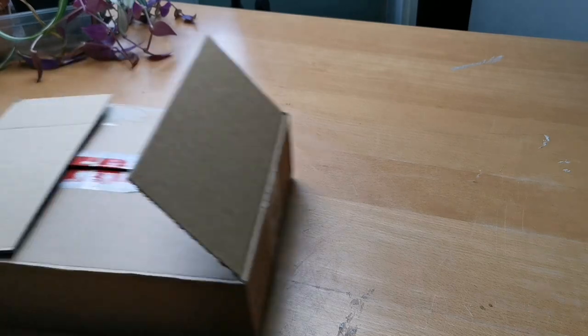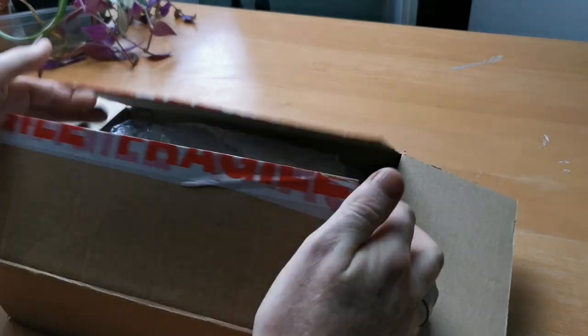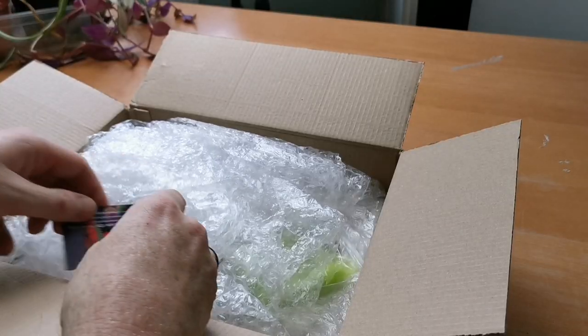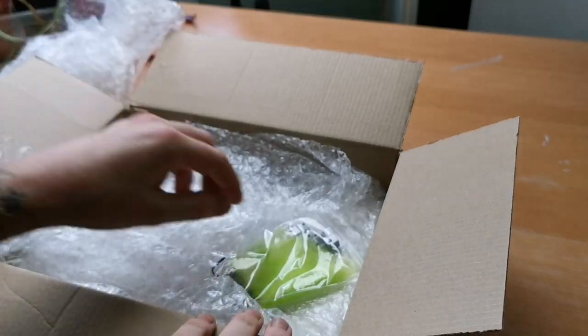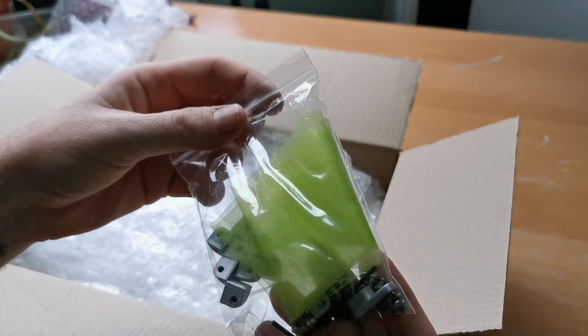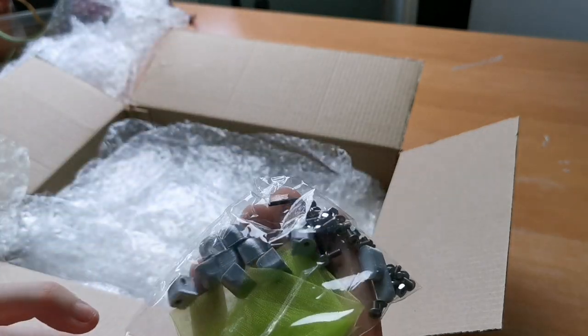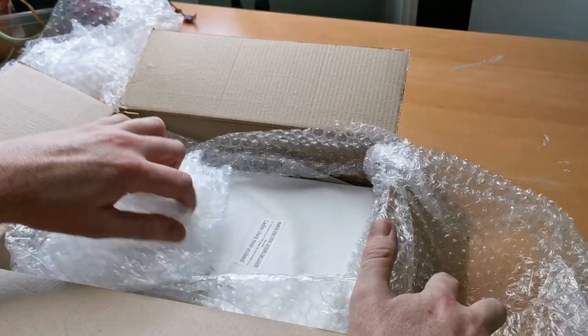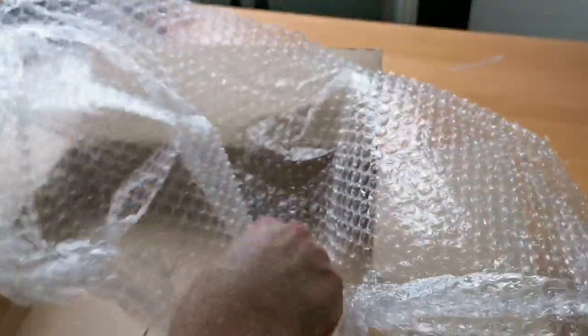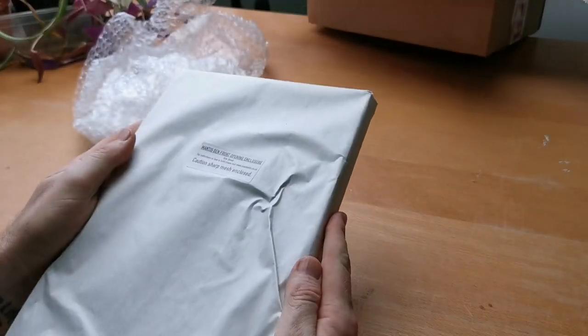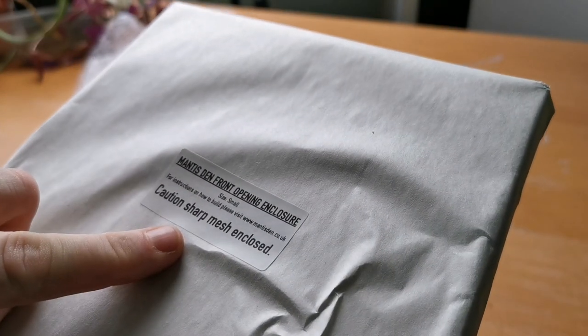Once you've purchased from mantisden.co.uk or their German website, you'll get your box arrived just like this with a lovely little business card. Along with the business card you get a little bag of gubbins that's got all the brackets, the clips, the latches, some extra mesh. If the wire mesh that does come with this is a bit too big you can use that. You also get your flat pack enclosure.